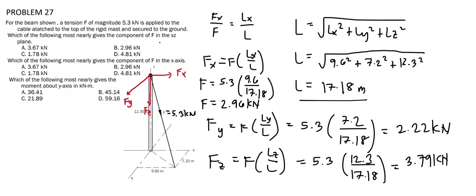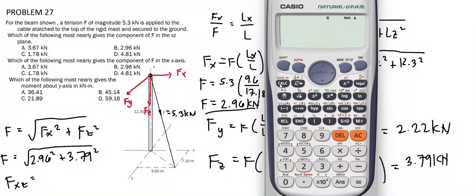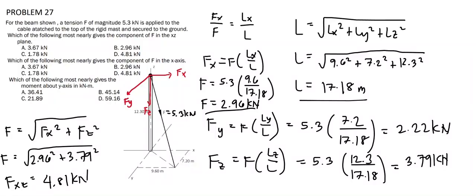Now, to solve for the component of F in the xz-plane, we take the square root of fx² + fz². So that is √(2.96² + 3.79²) = 4.81 kN, which is answer letter D.